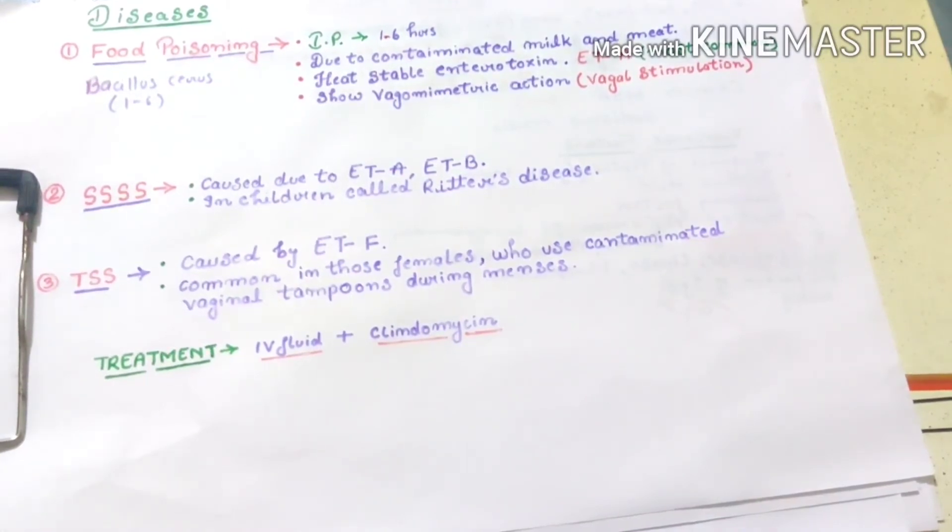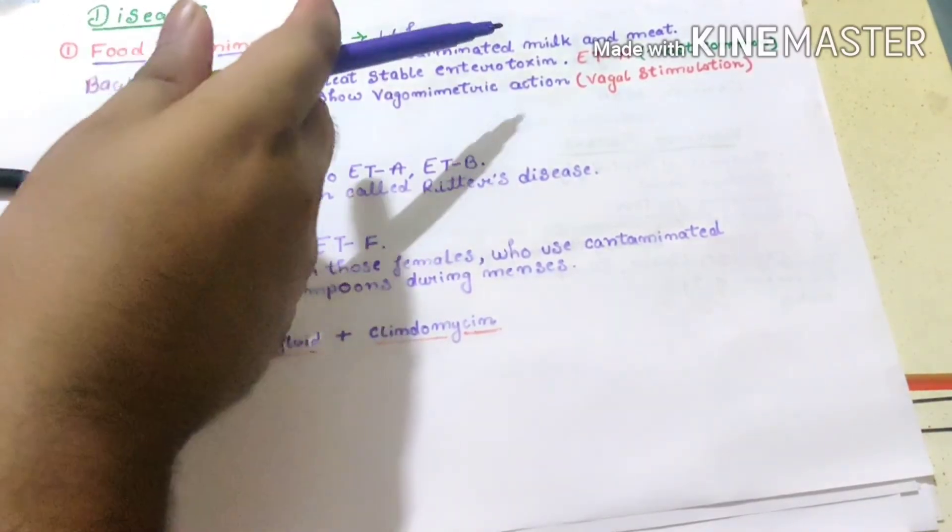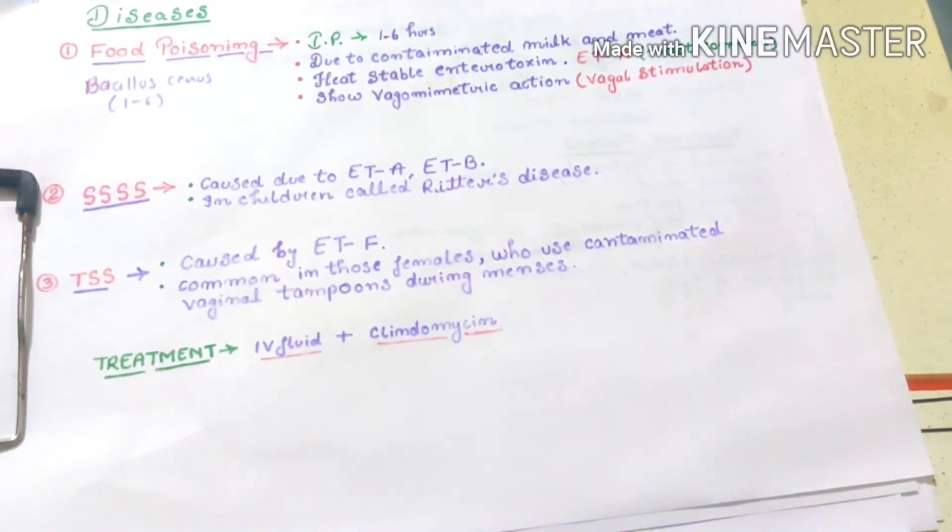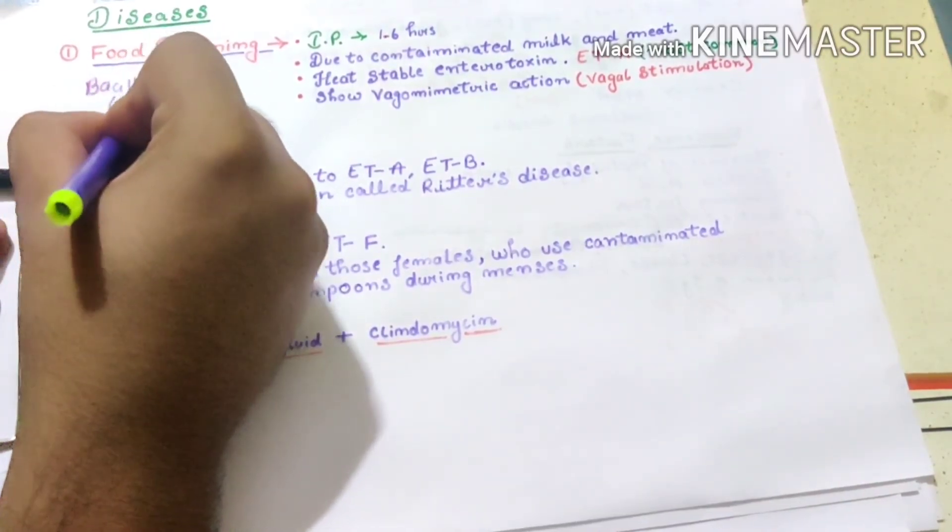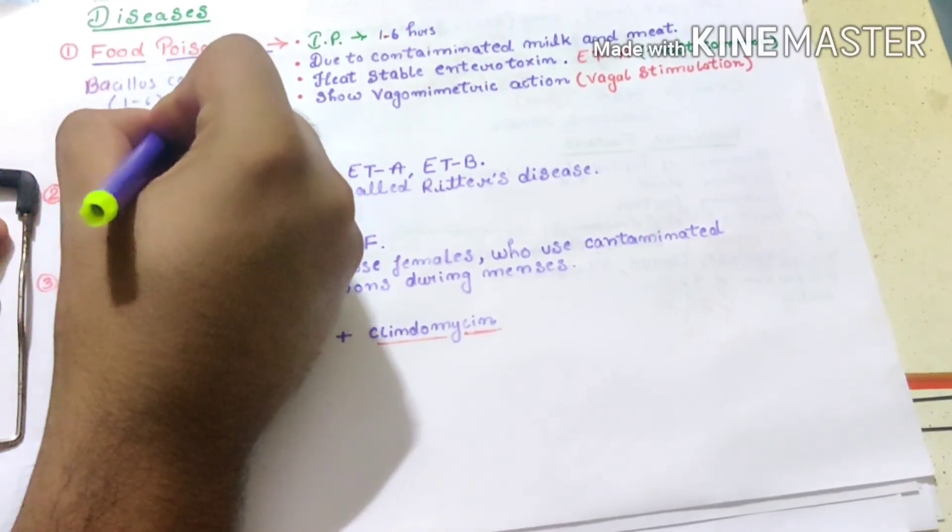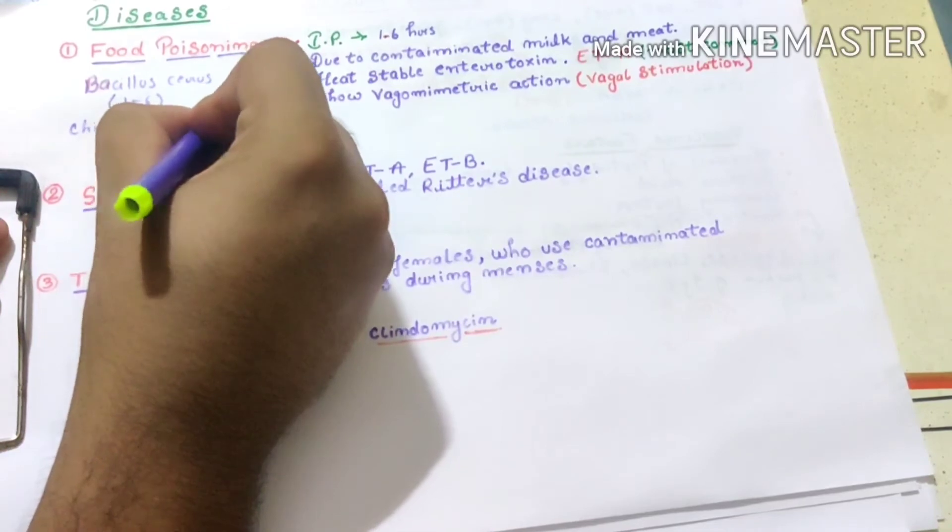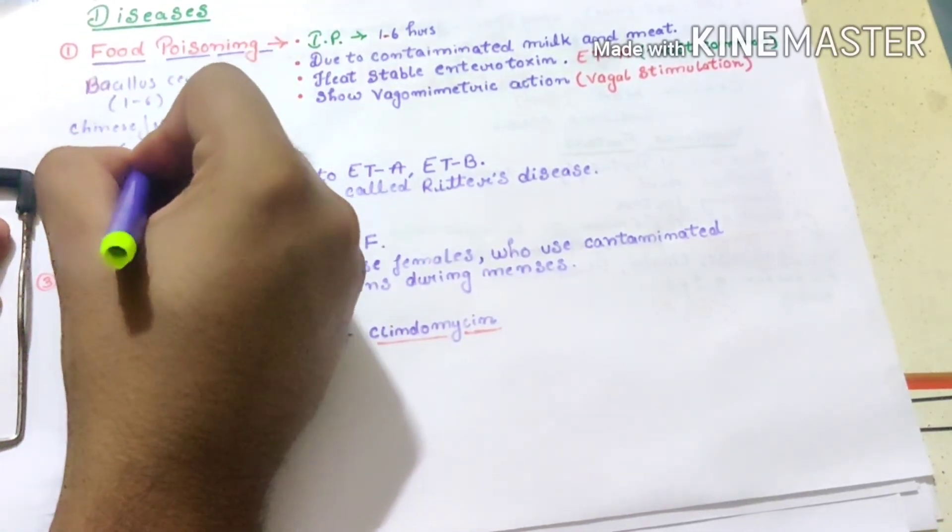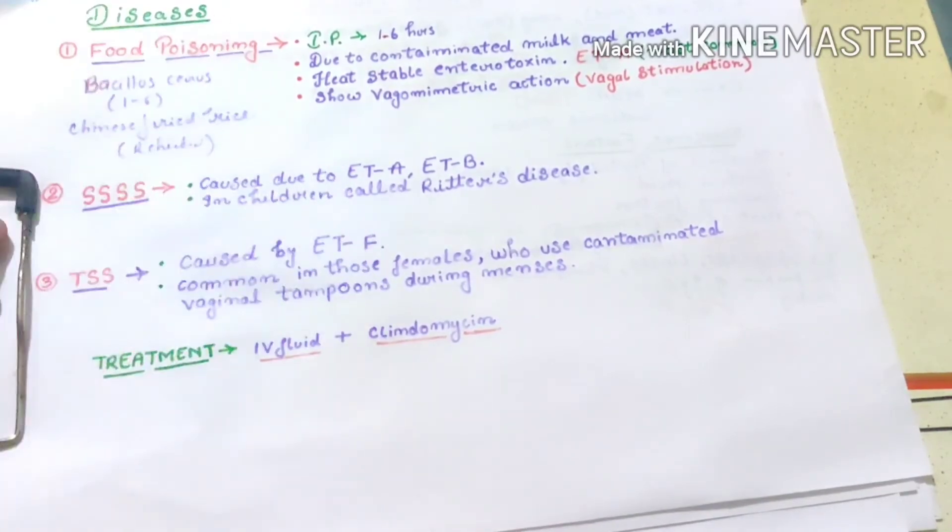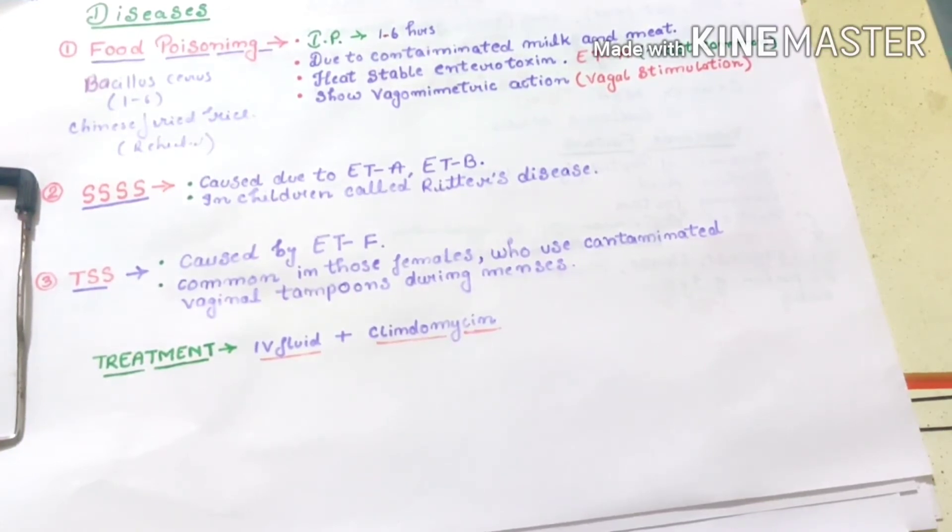So how can we differentiate that the particular food poisoning is due to Staph aureus or Bacillus cereus? In case of Staph aureus, food poisoning is caused due to contaminated milk and meat products, but in case of Bacillus cereus, food poisoning is caused due to Chinese fried rice.